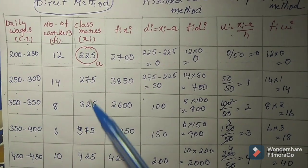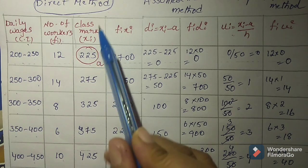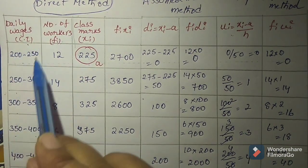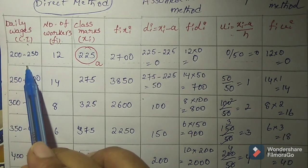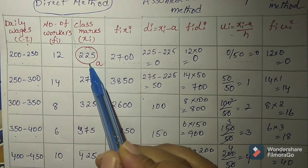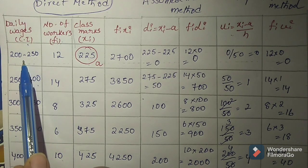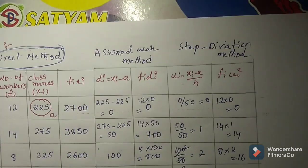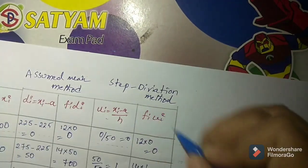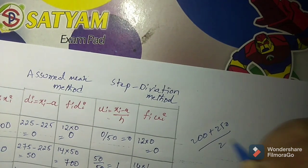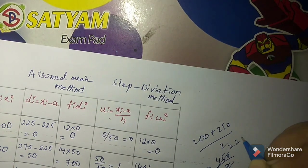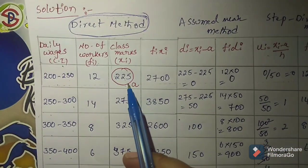Then find the class marks xi. How to find class marks? Take the average of the class interval. For the first class interval 200 to 250, the average is 200 plus 250 by 2, which equals 450 by 2, giving us 225. That is the class mark. For the second class interval, find the average of 250 and 300, which gives us 275.